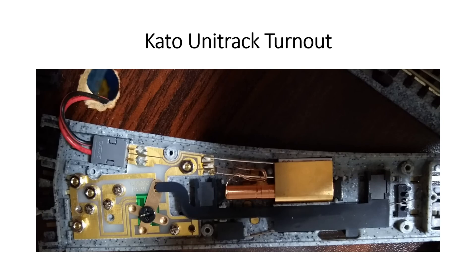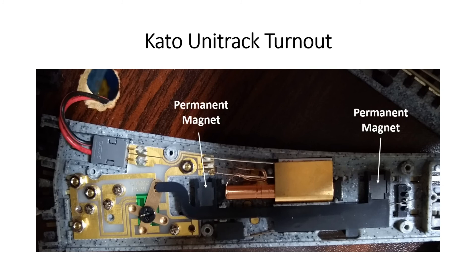Let's take a quick look at the Unitrack turnout on the inside. Here's one with the cover removed — everything is located underneath the track in the roadbed. It looks a bit complicated because there's also routing circuitry for directing power to the diverging and through rails. You can see the permanent magnets and the solenoid in the center. Notably, in this turnout it's actually the permanent magnets that move — the solenoid stays in place, and the two permanent magnets move the plastic piece that throws the turnout back and forth.